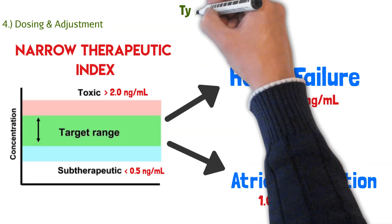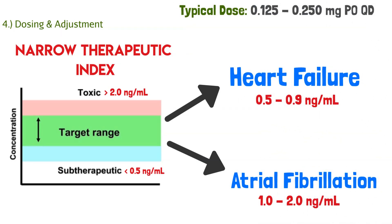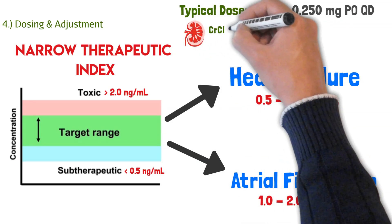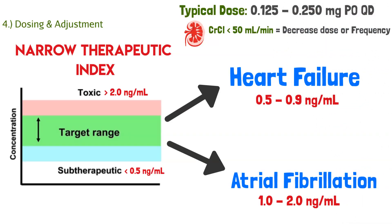For dosing, digoxin comes in tablets as well as IV, but we'll focus on the outpatient setting. We want to start small: doses range from 0.125 milligrams to 0.25 milligrams by mouth daily. Depending on what you're treating, you may need to adjust the dose up or down. Kidney function also comes into play — if a patient's kidney function is declining, you need to decrease the digoxin dose accordingly.